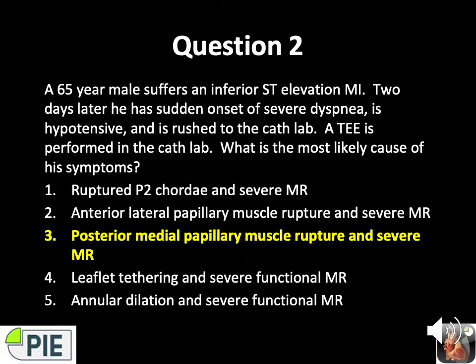The two papillary muscles are named for their location: anterolateral and posteromedial. The anterolateral papillary receives a dual blood supply from the LAD and the circumflex, while the posteromedial one receives a single blood supply from the RCA and is more prone to ischemia. Ischemia and papillary rupture can lead to acute severe MR and heart failure. The answer to question two is number three — posterior medial papillary muscle rupture in severe MR, because this was an inferior MI supplied by the RCA, which is the territory of the posteromedial papillary muscle.